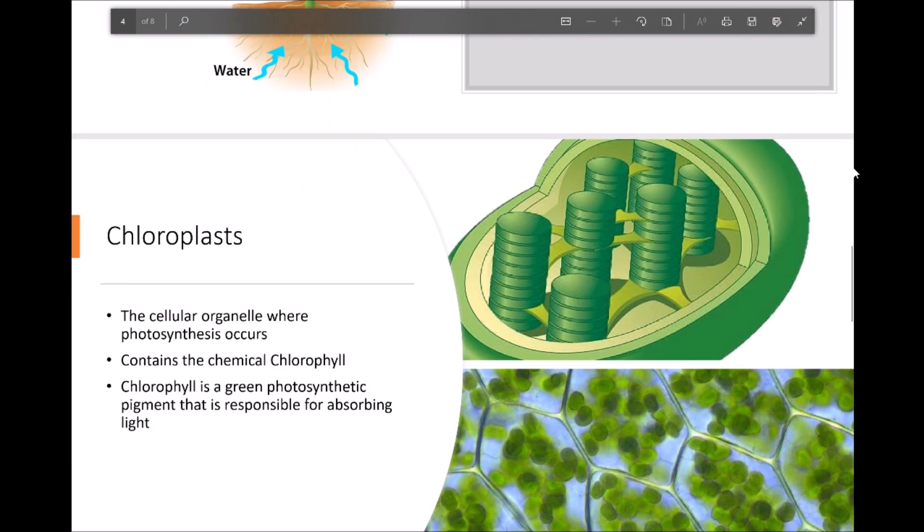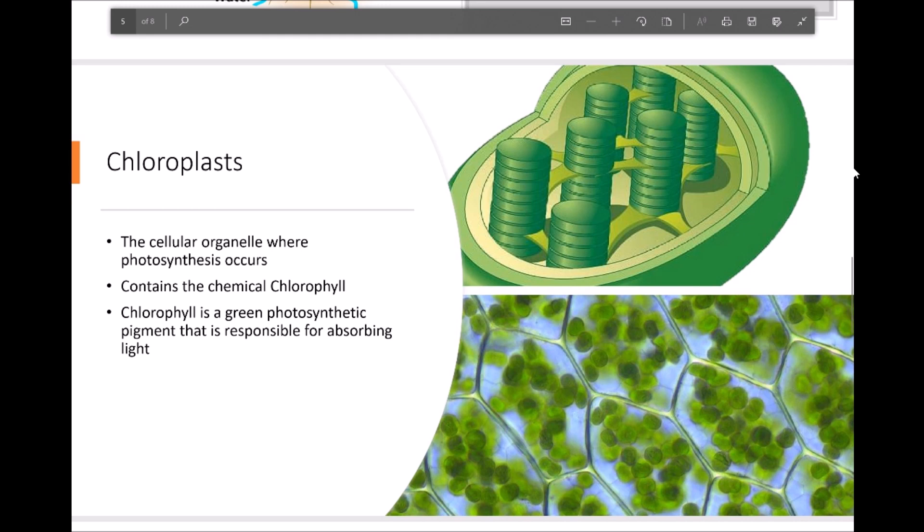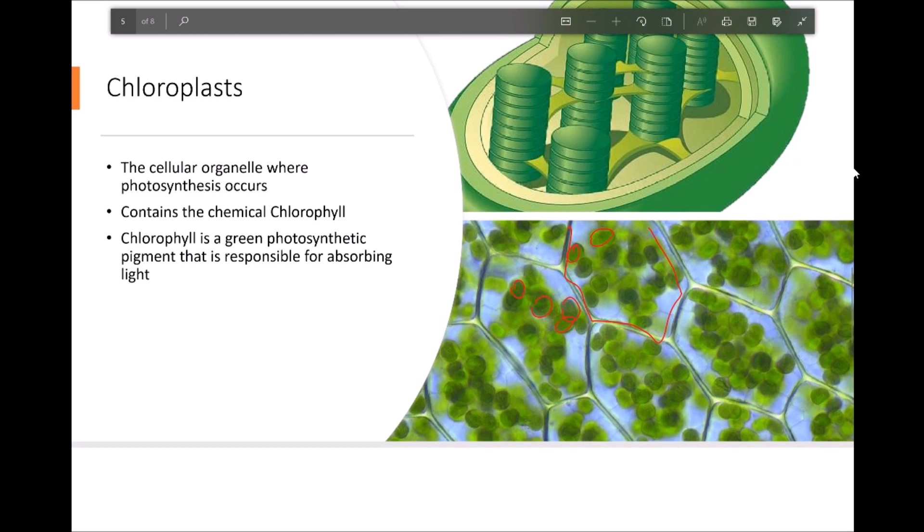Chloroplasts are cellular organelles where photosynthesis occurs, so these little green things within these cells. These contain the chemical known as chlorophyll. Chlorophyll is a green photosynthetic pigment that is responsible for absorbing light. Chlorophyll is actually the cause of the green colour within plants.